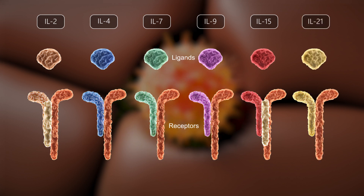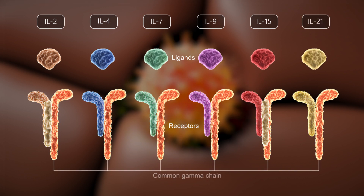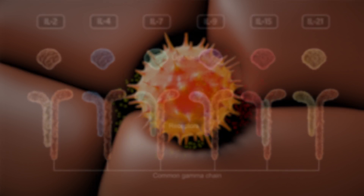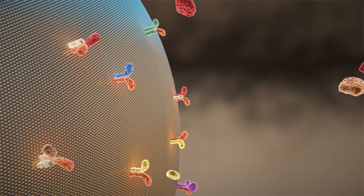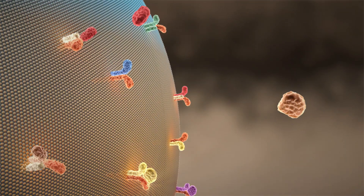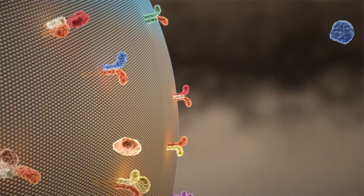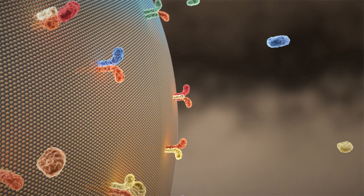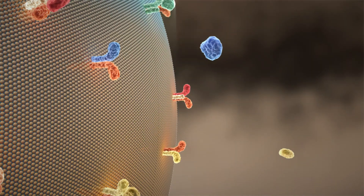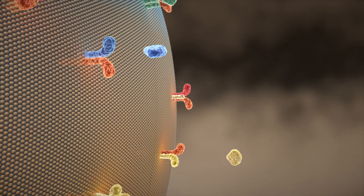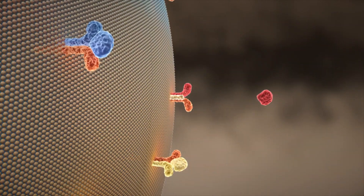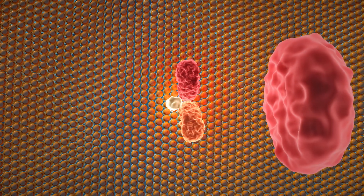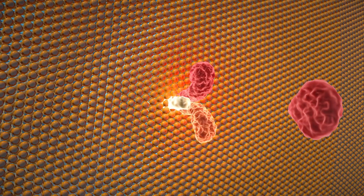which all have unique receptors but share a common gamma chain subunit. These cytokines perform important functions within the body when they are properly regulated, but in the case of psoriasis, many of these get out of control.